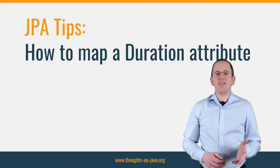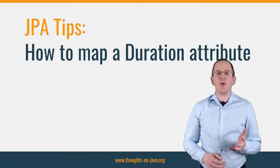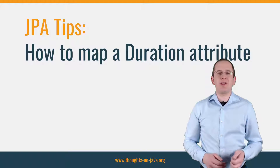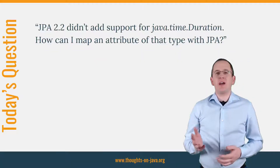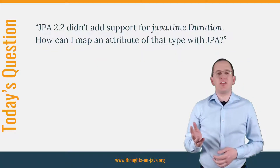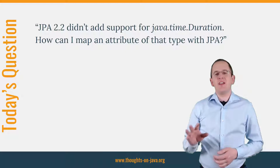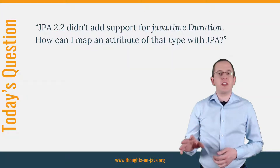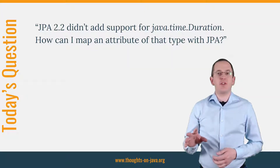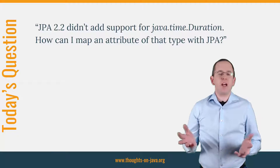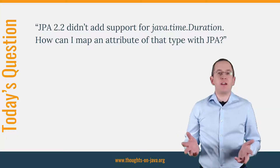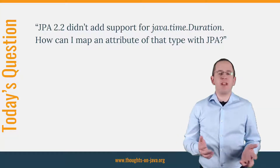Hi, I'm Tom Janssen from ThoughtsOnJava.org with a new Hibernate Tip. In today's video, I want to answer the following question: JPA 2.2 didn't add support for Java Time Duration. How can I map an attribute of that type with JPA?